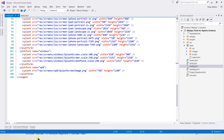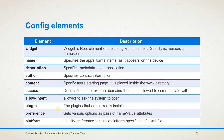Let's review the most important tags of the config.xml file. Widget is the root element, specifying the ID, version, and namespace. Name specifies the application name that appears on the device. Description specifies metadata about the application that may be used by the store. Author specifies the author's name and contact details. Content specifies the app's starting page within the www directory. Access specifies external domains that our application will access. Allow-intent specifies the protocol or URI in which our application will open. Plugin specifies the list of currently installed plugins. Preference specifies a set of various options as name-value attribute pairs. Platform specifies preferences for a single platform.